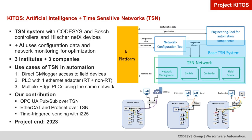The KITOS project combines artificial intelligence and time-sensitive networks. The TSN system is built with CodeSys and Bosch controllers and Hilscher NetX devices. AI uses configuration data and network monitoring for optimization. Three research institutes and three companies are working together. Use cases for TSN in automation include direct condition monitoring, logger access to field devices, PLCs with one Ethernet adapter doing real-time and non-real-time communication, and multiple PLCs using the same network. Our contribution is OPC UA PubSub communication over TSN, and EtherCAT and PROFINET over TSN, with time-triggered sending using the Intel E225 chip. The project ends in 2023.